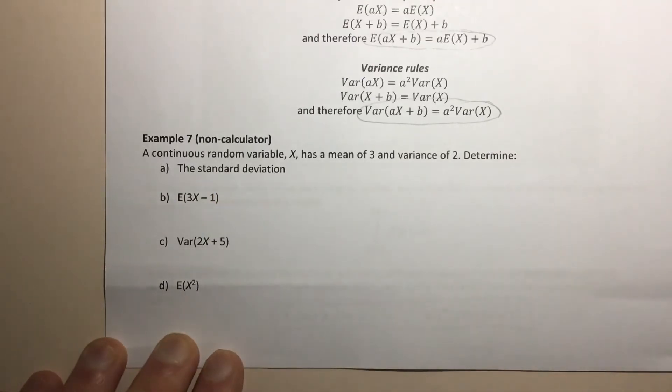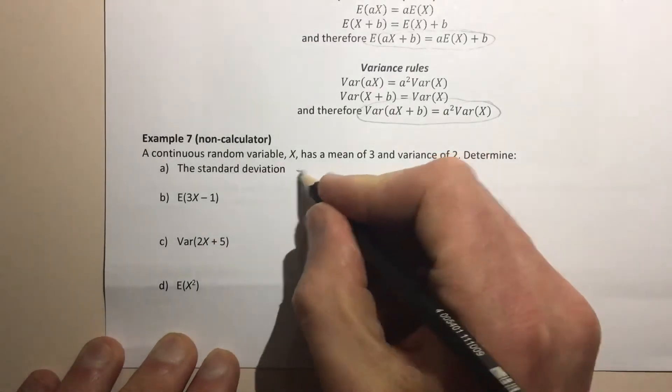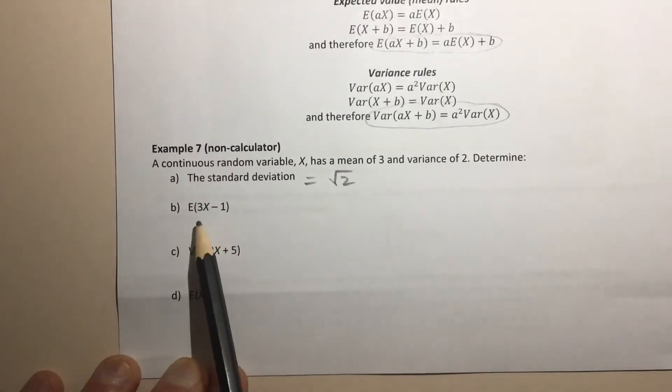continuous random variable X has a mean of 3 and a variance of 2. Determine, and we've got a few things to find out. First one's the standard deviation. Well, if we know the variance, what do we do to find the standard deviation? We square root it, so that just equals √2. It's nice and easy.